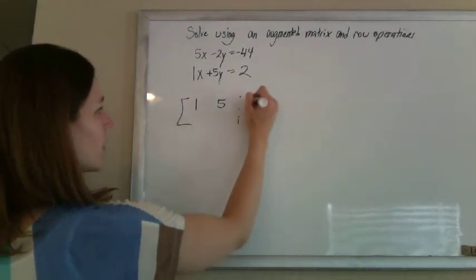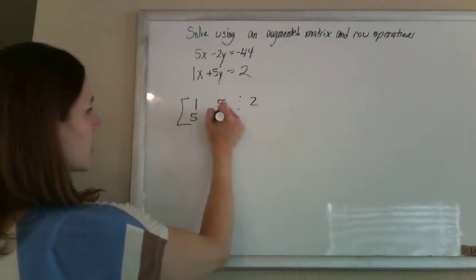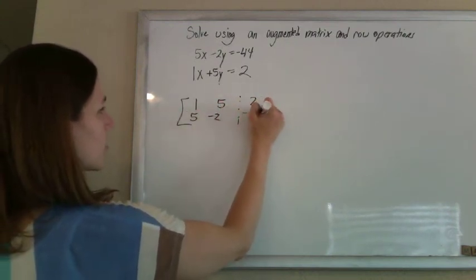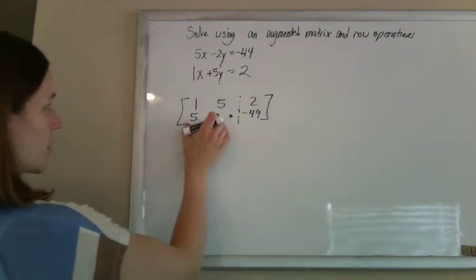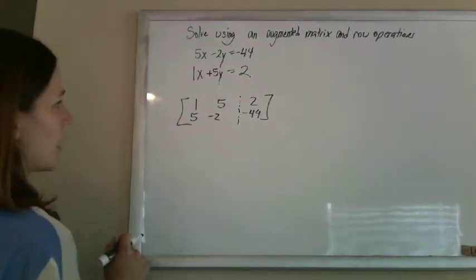1, 5, and then a 2, and then a 5, a negative 2, with an answer of negative 44. So it's augmented dotted line, separates the coefficients from that answer column.